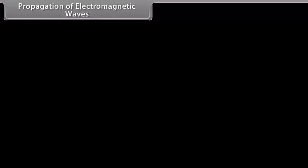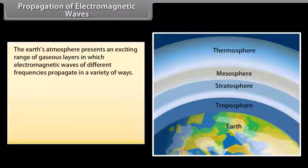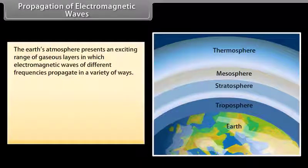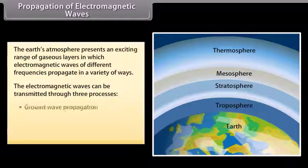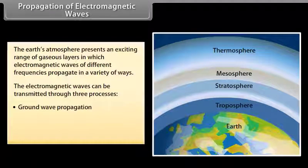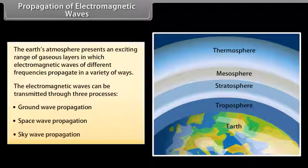The Earth's atmosphere presents an exciting range of gaseous layers in which electromagnetic waves of different frequencies propagate in a variety of ways. Electromagnetic waves can be transmitted through three processes: ground wave propagation, space wave propagation, and sky wave propagation.